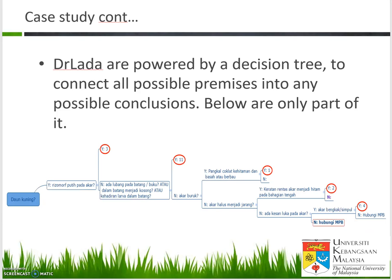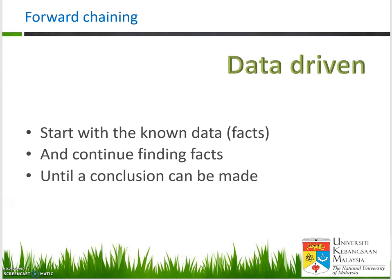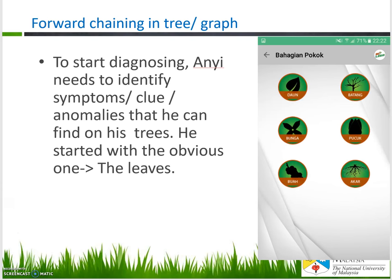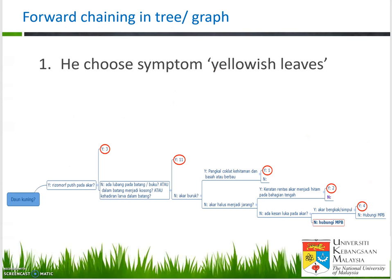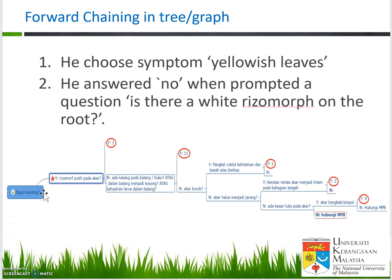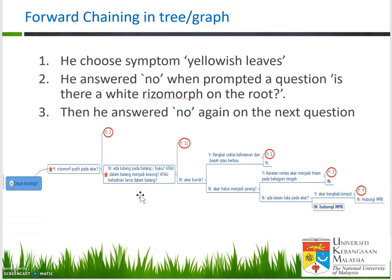Let's look at how a machine decides the diagnosis using forward chaining. Forward chaining is data-driven — that means you know what the facts are now. We start with known facts and continue finding proof until we can make a conclusion. To start diagnosing using forward chaining, Ani starts with what he knows: the leaves are yellowish. He then answered no to 'rhizomorph putih pada akar', so the app asks the next question — is there any hole on the stem? He answered no again.